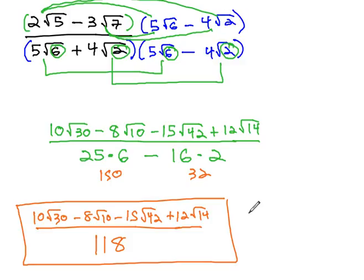Again, we rationalized it by multiplying by the conjugate. Multiply by the conjugate, and then simplify what's left.